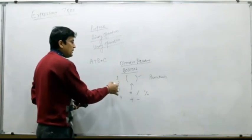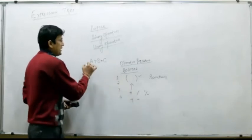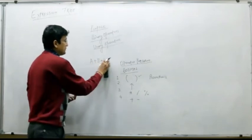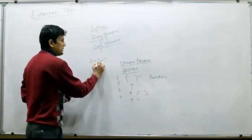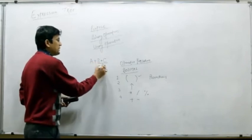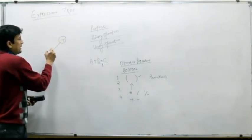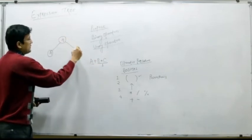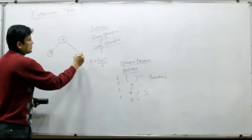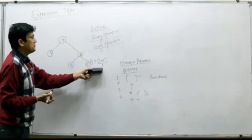Based on this, let us build the expression tree for A plus B multiplied with C. In this expression, multiplication has higher precedence than plus. So we make sub-expressions: the highest priority operator, multiplication, is associated with operands B and C — sub-expression number 1. Now we have A plus sub-expression 1. So plus becomes the root node, A on the left, and sub-expression 1 expands on the right with multiplication, B on the left, and C on the right.